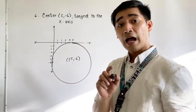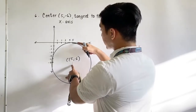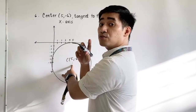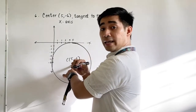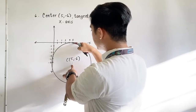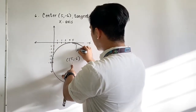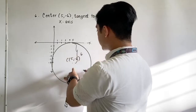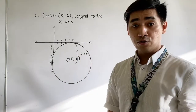But how do we get the radius? If it is tangent to the x-axis, all we have to do is count the y-coordinate units. So from the center up to the x-axis, the y-value is equal to 6. Therefore, that is the radius.